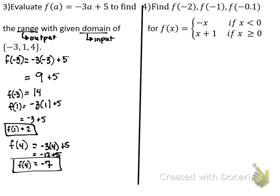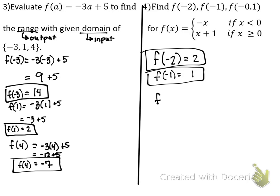What do you notice when we put in negative two, negative one, and negative 0.1? They're all negative, so they're all going to use the first equation — and the answers are their positive opposites. Negative two gives positive two. If we put in negative one, the answer is positive one. If we put in negative 0.1, it's going to be positive 0.1. And are these the only inputs we could use? No.